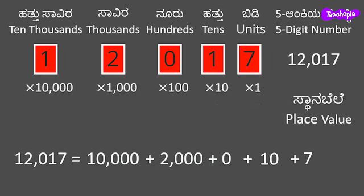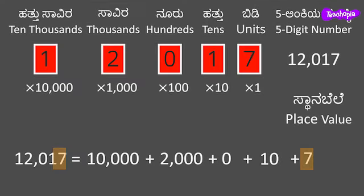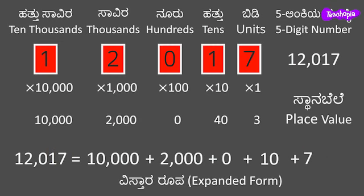We can observe that the digit 1 is in the 10,000s place and hence we have its place value as 10,000. The next place is thousands and the digit is 2, so in the expanded form we have 2,000. The next place is hundreds and the digit is 0, so in the expanded form we have 0. The next place is tens and the digit is 1, so in the expanded form we have 10. The next place is units and the digit is 7, so in the expanded form we have 7. This is the expanded form of the number.